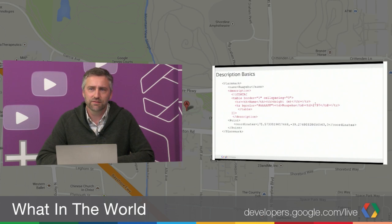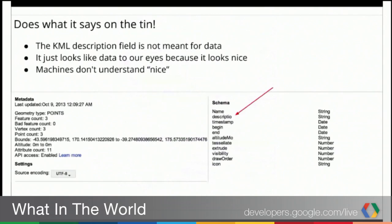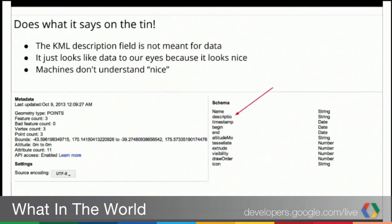We can actually see in this screenshot that we can see the underlying KML and what it looks like — it just looks like HTML. And so if we import that into Maps Engine, you can see all we get is a description field. We're actually not able to do anything with it — we can't style it, filter it, or anything like that. That's obviously a problem because the whole point of wanting structured data in KML and then in Maps Engine is that you want to be able to do that sort of filtering and styling.